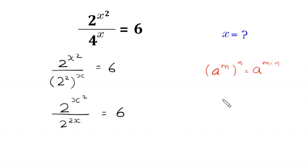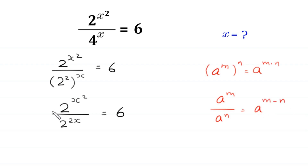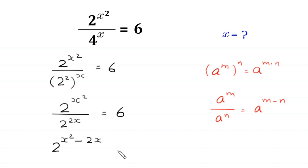Now, by using the power rule — a to the power m divided by a to the power n is equal to a to the power m minus n — this 2 to the power x squared divided by 2 to the power 2x will become 2 to the power x squared minus 2 times x, is equal to 6.